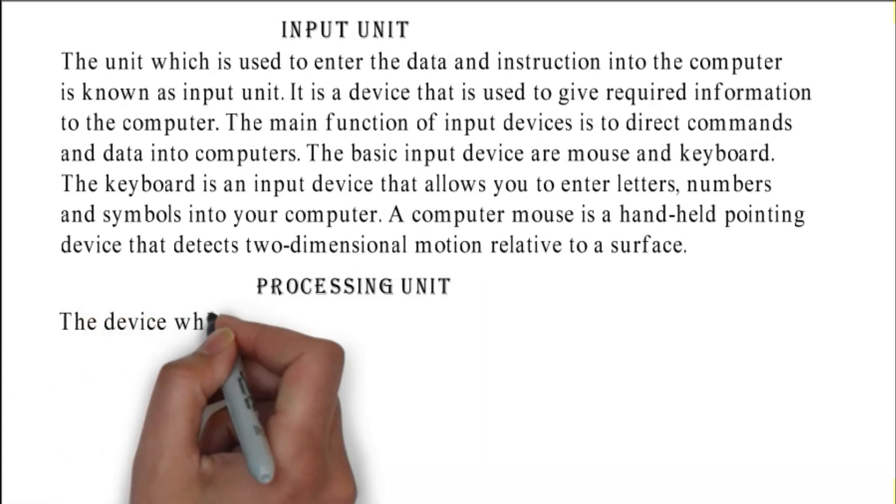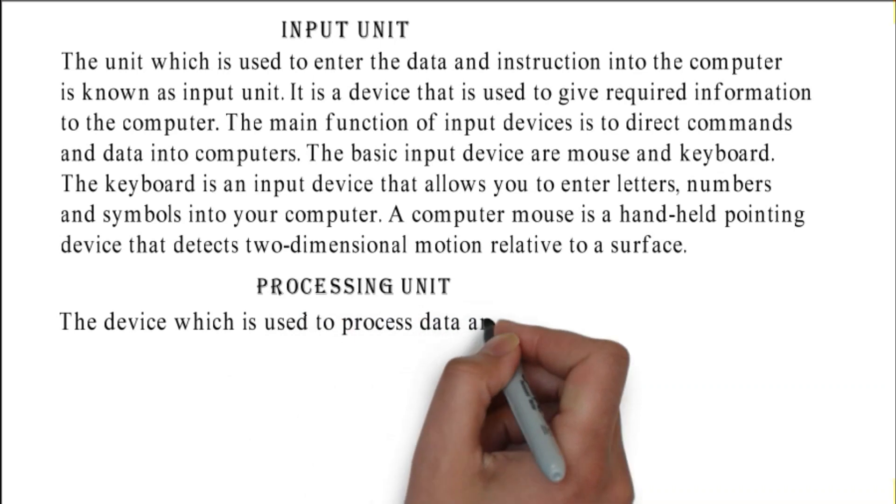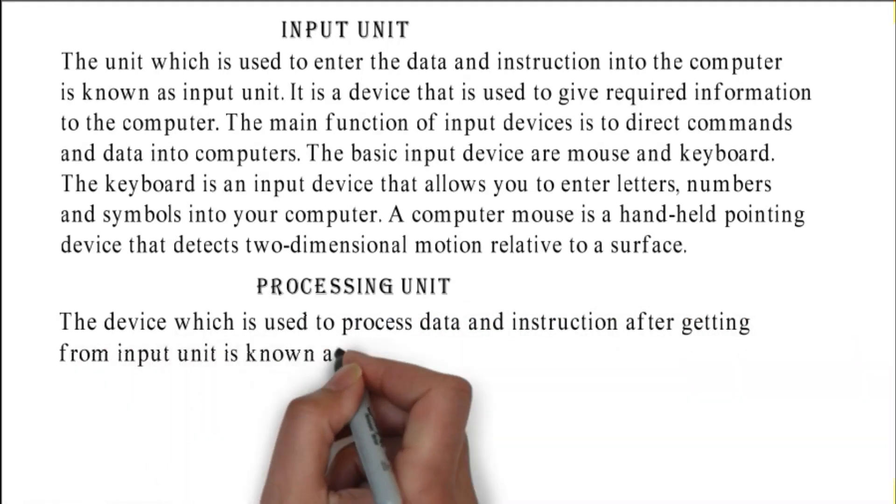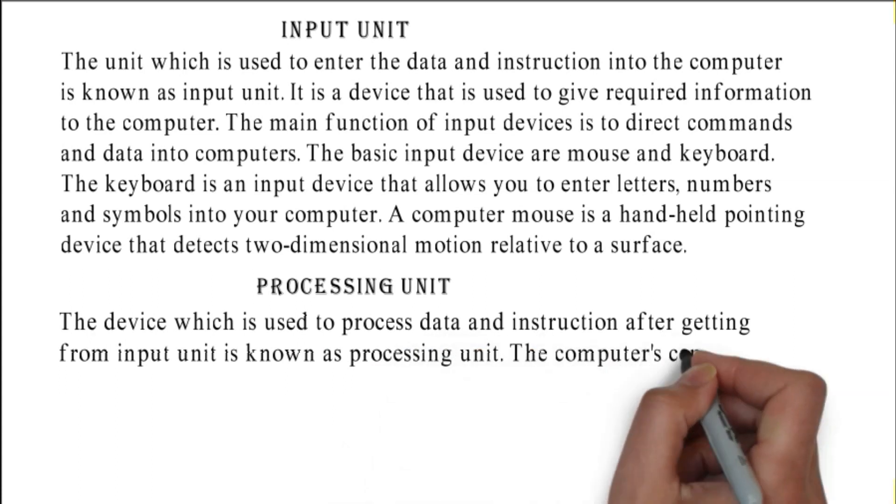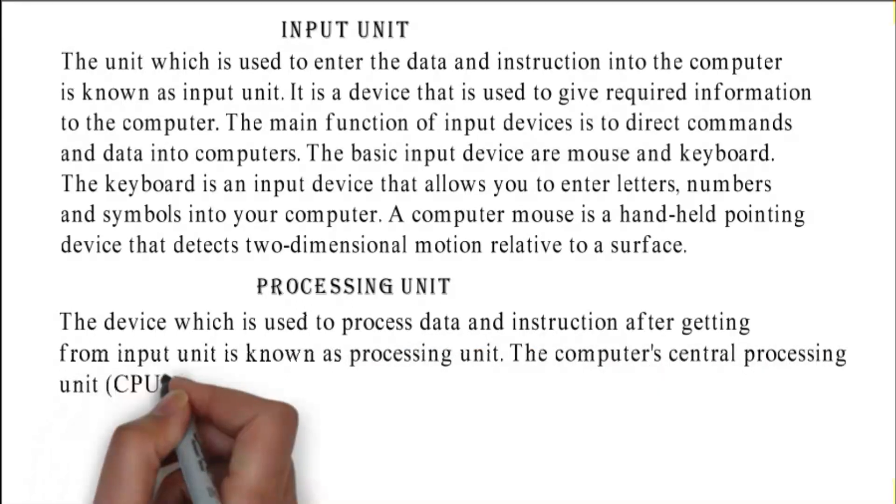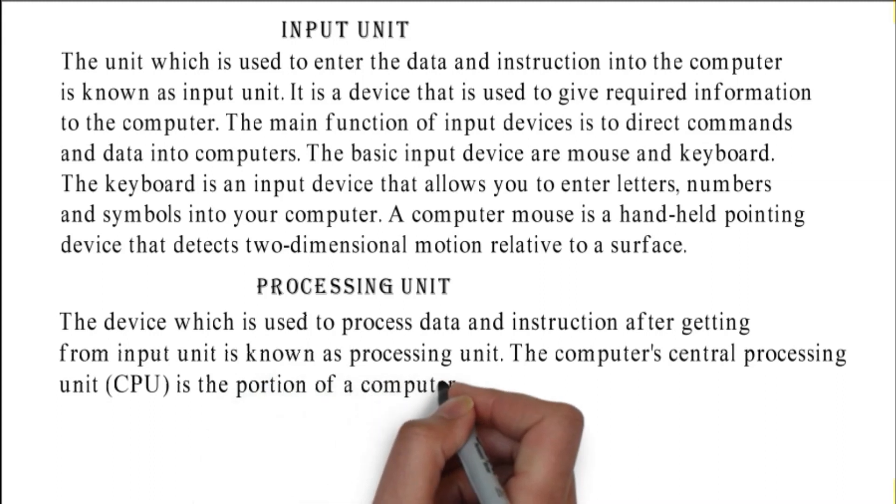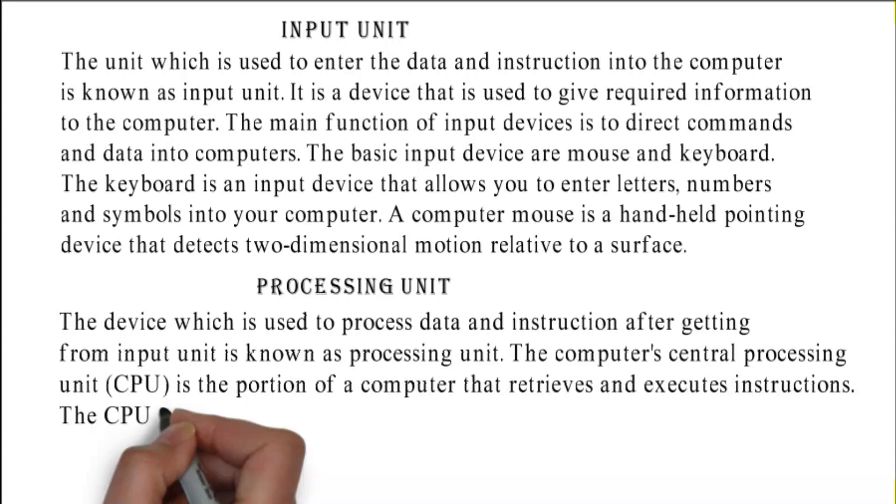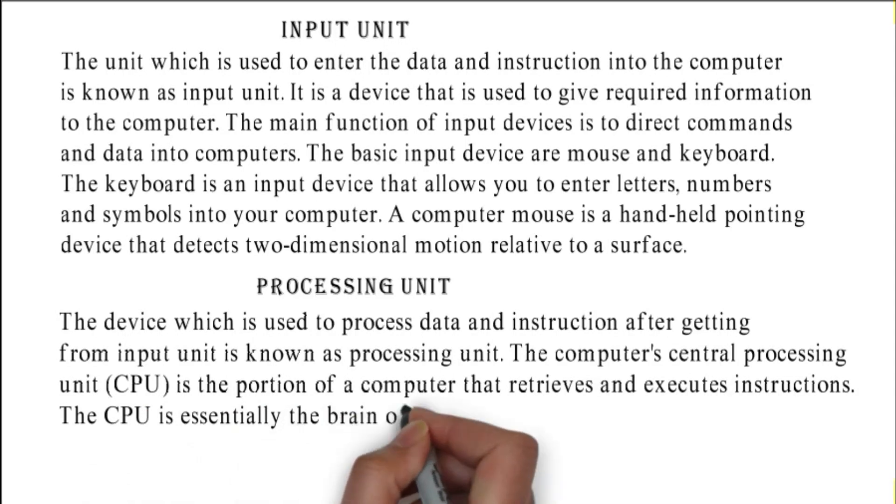Processing unit: the device which is used to process data and instruction after getting from input unit is known as processing unit. The computer's central processing unit (CPU) is the portion of a computer that retrieves and executes instructions. The CPU is essentially the brain of a CAD system.